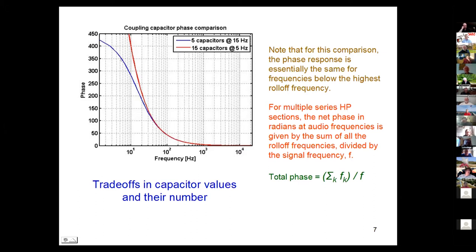The five capacitors have a phase which is increasing as frequency goes lower, asymptotic to 450 degrees. The 15 capacitors will go up to 1,350 degrees. But look in the region of audio here - the phase is the same. The total phase is just the sum of all the frequencies divided by the frequency.